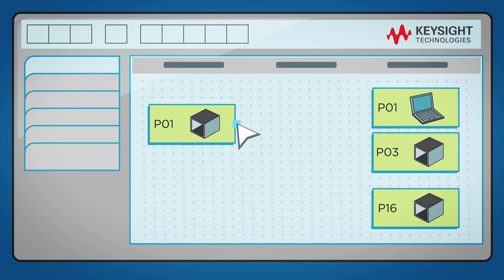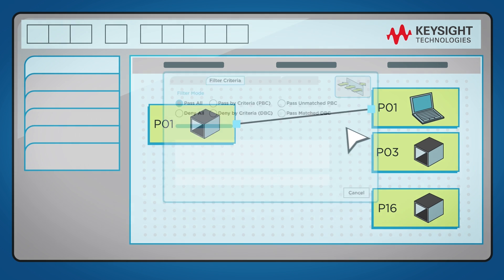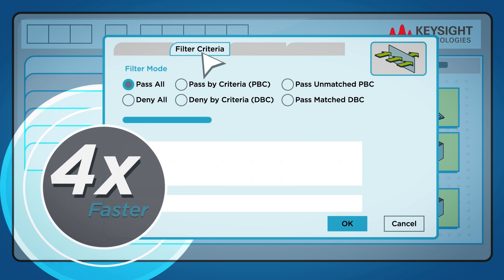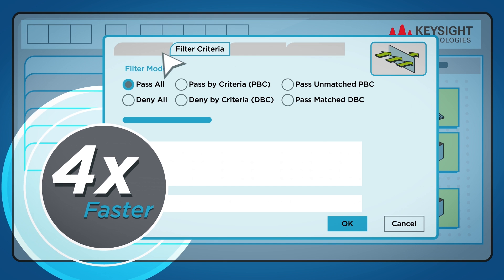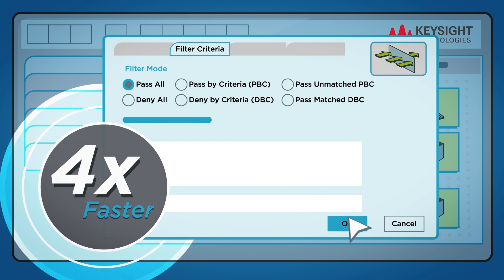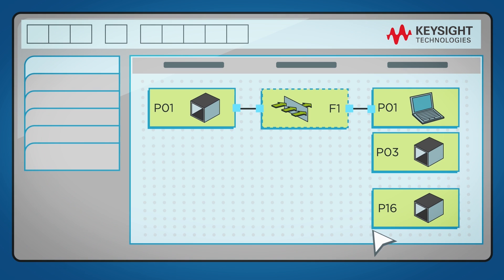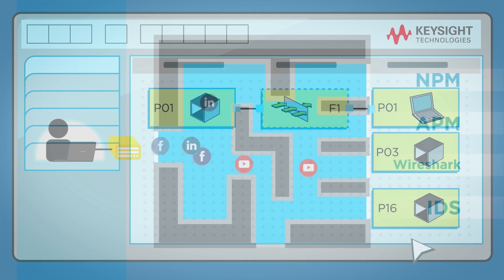For instance, Keysight's user interface is drag-and-drop as well as point-and-click. Creating a filter is easy and four times faster than other solutions on the market. Use the drop-down menu to start the filter — open, click, and draw. That's it.